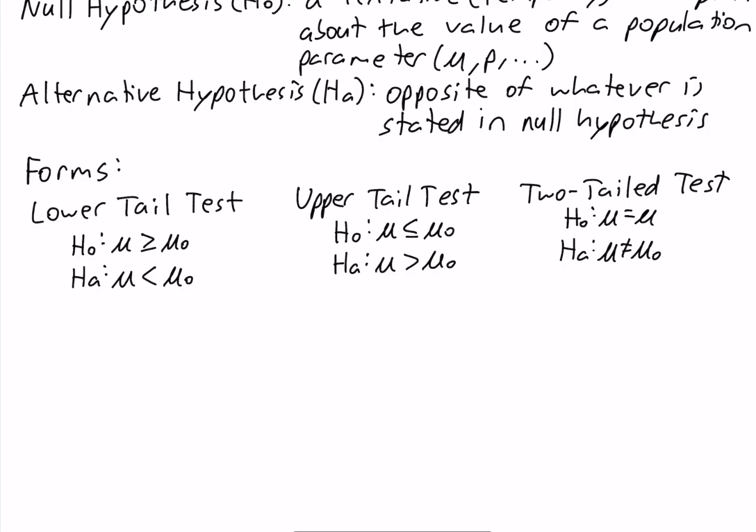A good way of identifying whether a test is Lower-Tailed, Upper-Tailed, or Two-Tailed is to look at the Alternative Hypothesis. In a Lower-Tailed Test, we have a less-than sign in the Alternative. For an Upper-Tailed Test, we have a greater-than sign in the Alternative. And in a Two-Tailed Test, we have an inequality in the Alternative Hypothesis. Also notice that the equality is always in the Null Hypothesis and not in the Alternative Hypothesis.